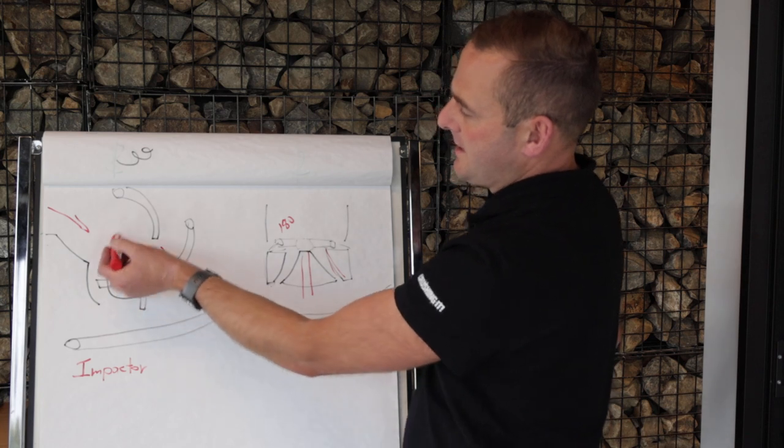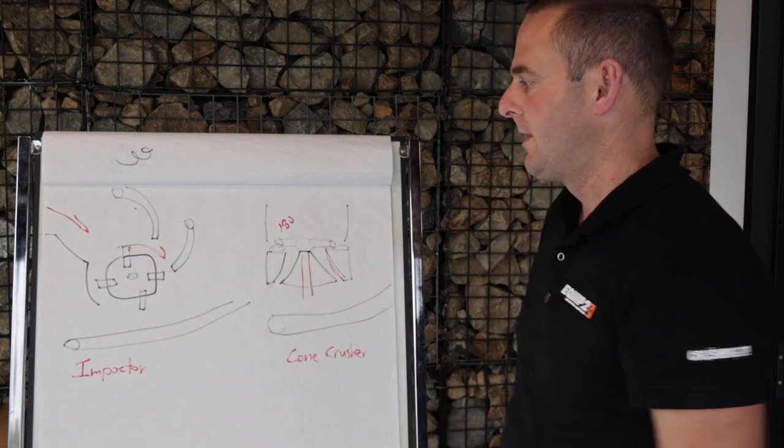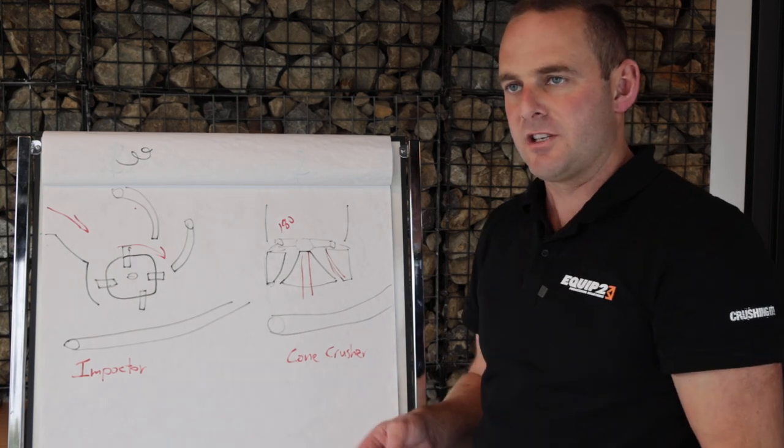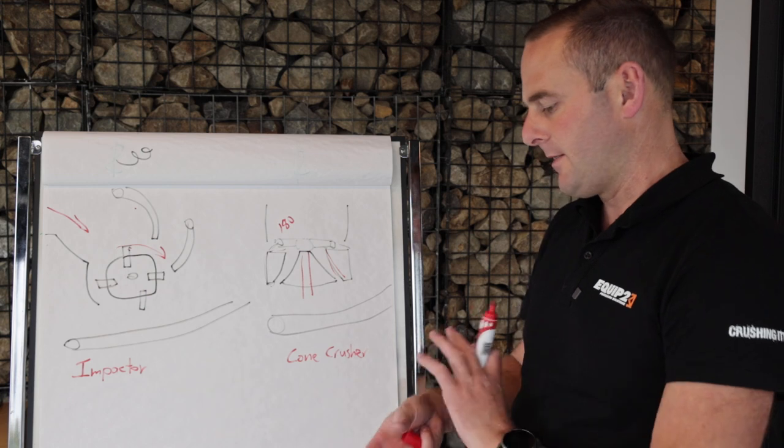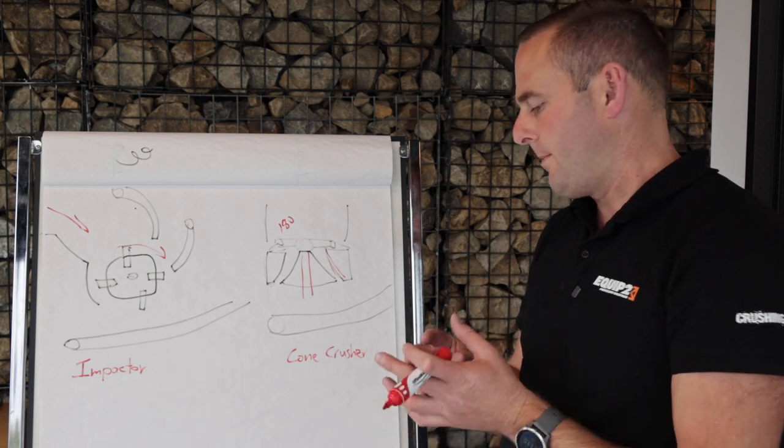When we talk about autogenous crushing, that's how we achieve our excellent shape index, giving us a very, very good cubical shape product.